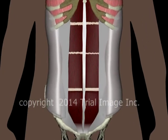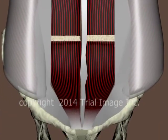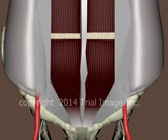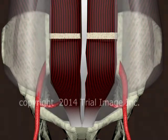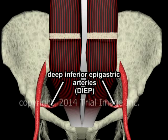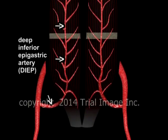Now let's take a look at the blood supply to the rectus muscles. Blood flow to the rectus muscles arises from the deep inferior epigastric arteries, which themselves arise from the iliac arteries in the pelvis. The deep inferior epigastric arteries are often known by the acronym DIEP or DEEP.